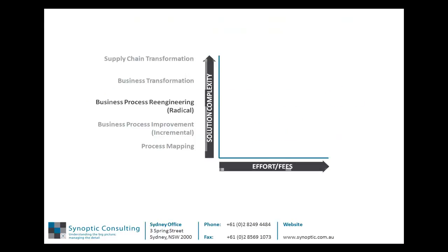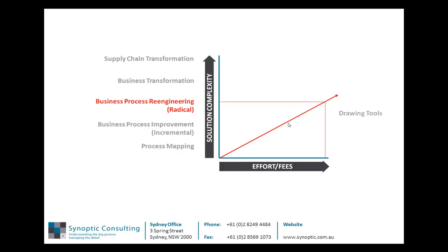What does this mean for your project? If we plot a simple graph of the type of outcome you're looking for from your project against the amount of effort required and therefore fees, and we pick a midpoint — say you're undertaking some sort of business process re-engineering — using drawing tools, because of their very limited functionality, you end up with an effort and fees result out here on the graph. Because of the huge productivity gain you get from using modelling tools, you end up reducing the effort and therefore the fees of the project by about two thirds for the same level of output. And that's a pretty impressive result.